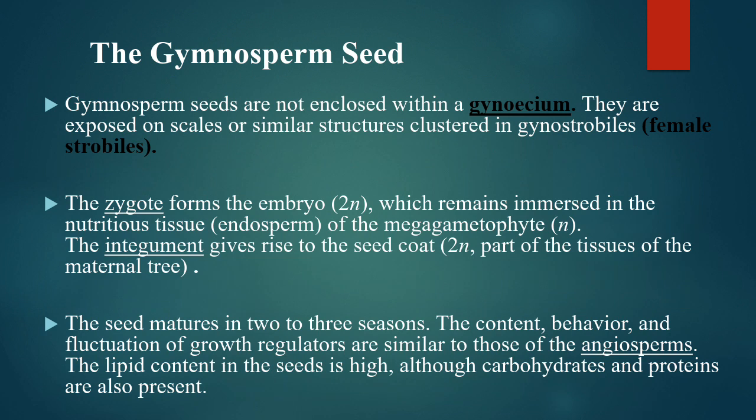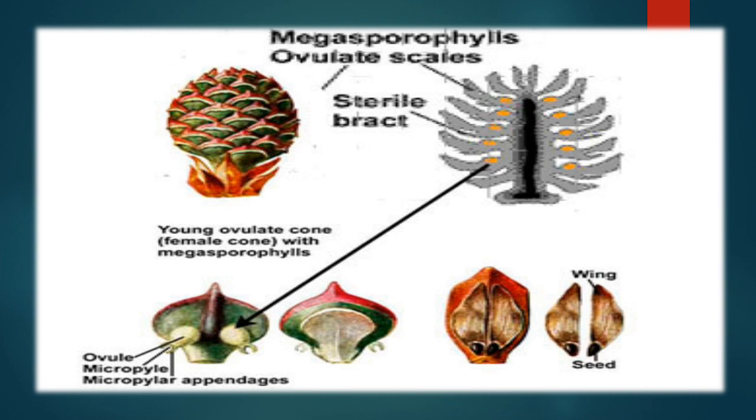The mature seeds are produced in three seasons. The content behavior and fluctuation of growth regulators are similar to those of angiosperms. The lipid content in the seed is high, although carbohydrates and protein are also present. You can observe in the diagram: megasporophyll, ovule scales, sterile bract, and micropyle.